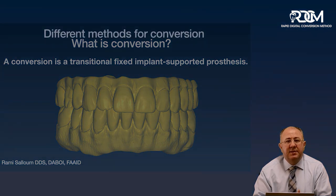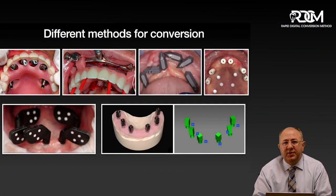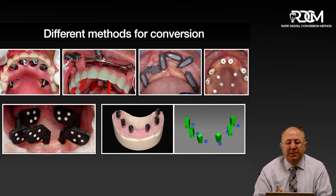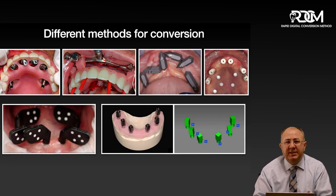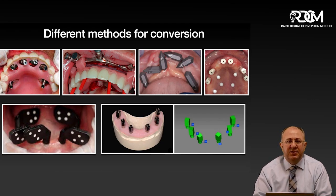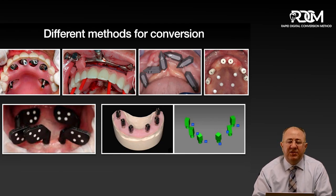I spoke about the different methods available to do conversion: denture conversion, the stackable guided conversion, different shape scan bodies that some companies are making. I also mentioned a few clinicians using fiduciary markers to help with merging scans, and then I spoke briefly about photogrammetry — that it is accurate but has limitations when it comes to soft tissue, midline, and incisal edge position — and that clinicians are adding a facial scanner and intraoral scanner to overcome those limitations.